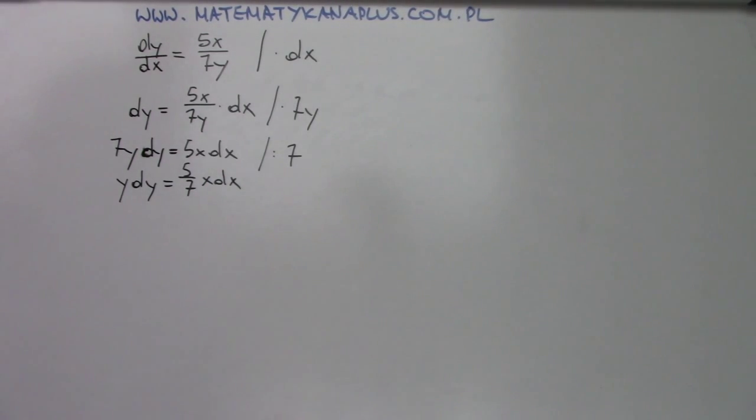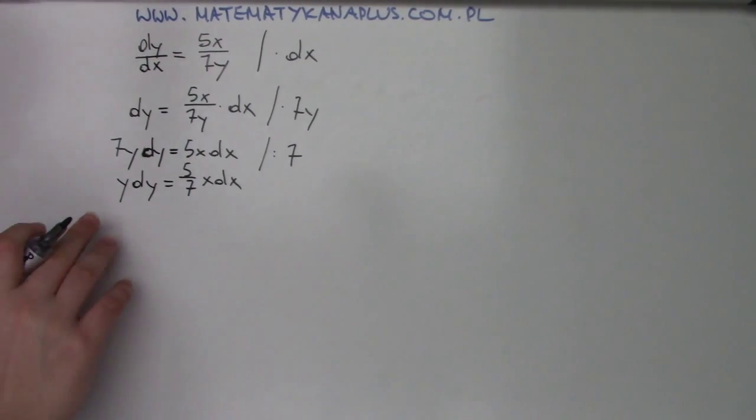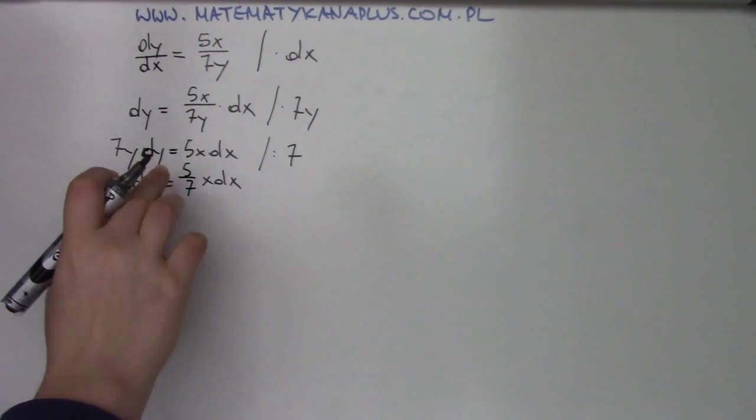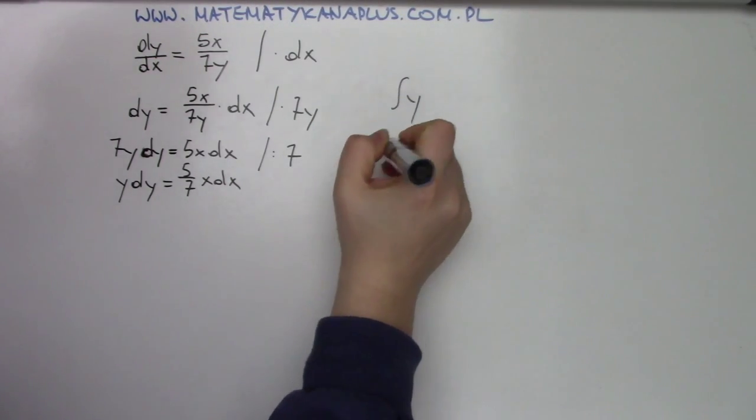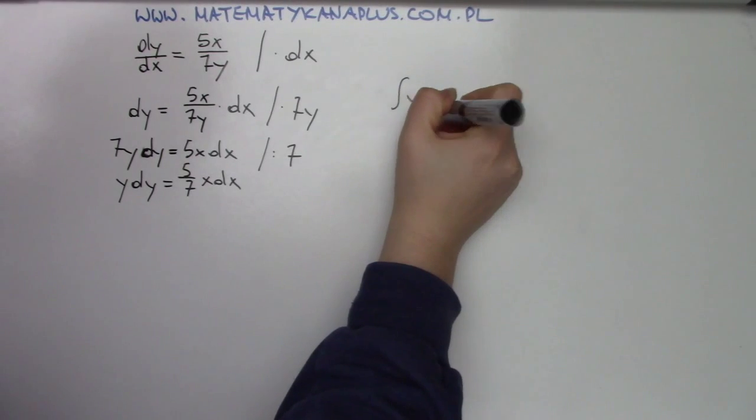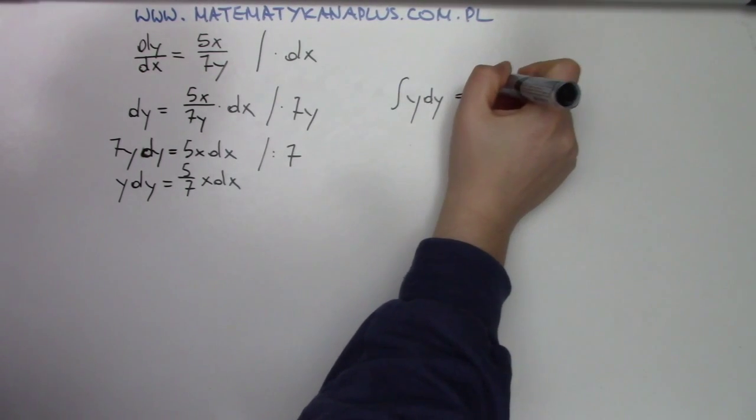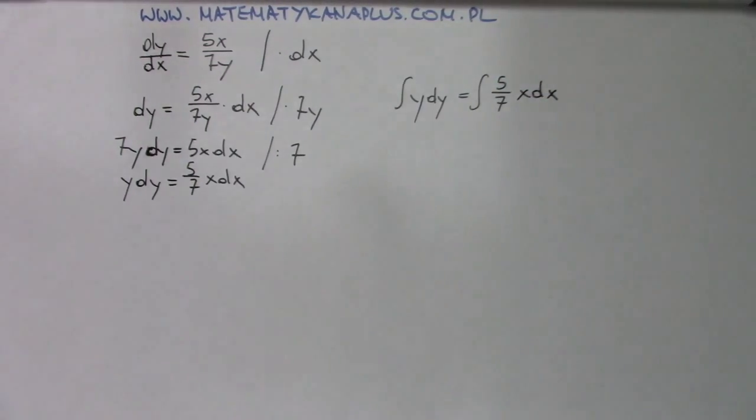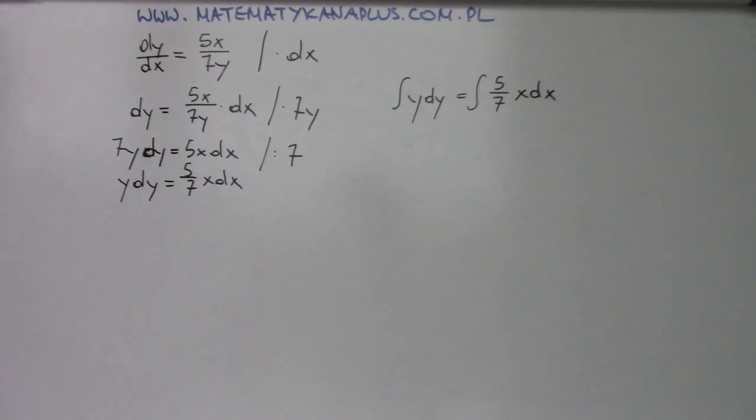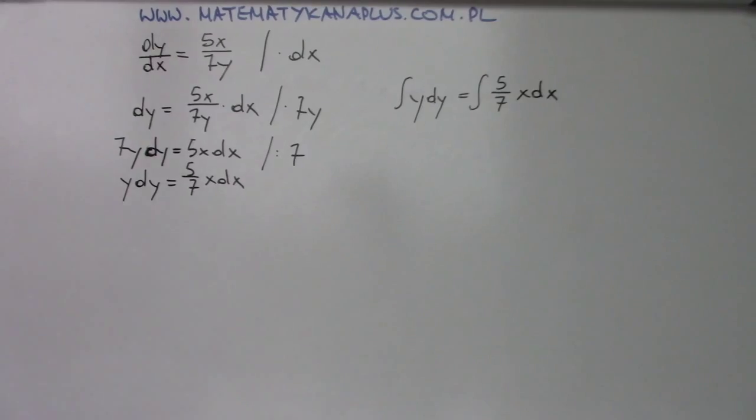And what now? When you separate your x's and your y's, now you need to compute the integral. You integrate the left side and the right side, so it will be the integral of y dy and the integral of our x dx.